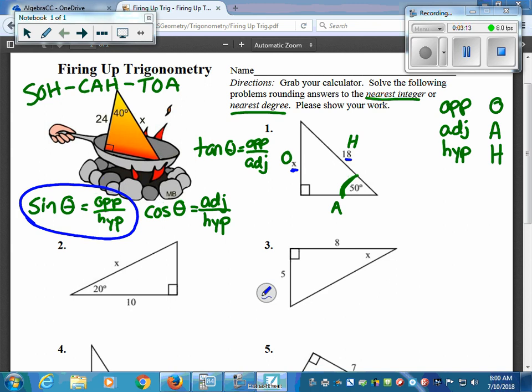So how it gets set up is it's the sine of the degree, 50 degrees, that's going to equal the opposite, which is X, over the hypotenuse, which was 18.